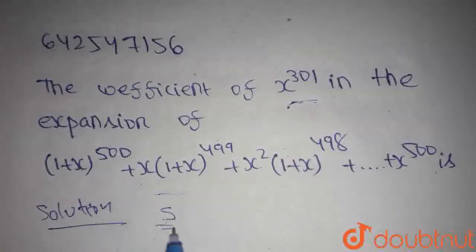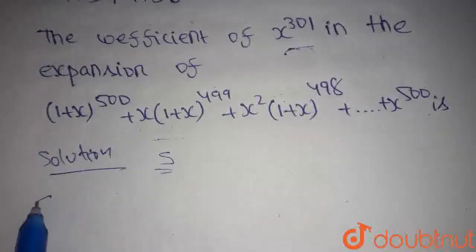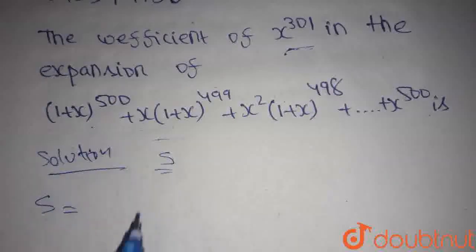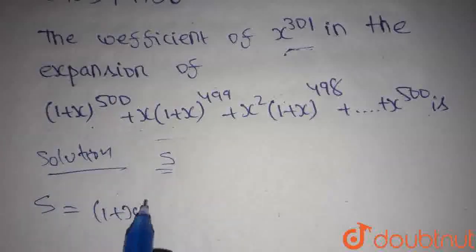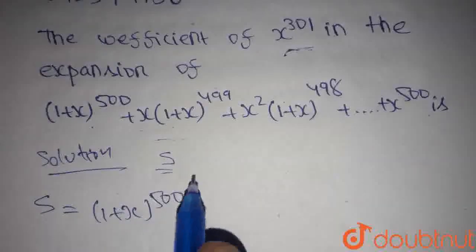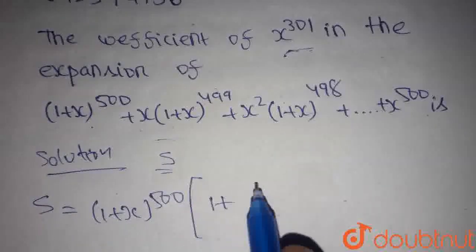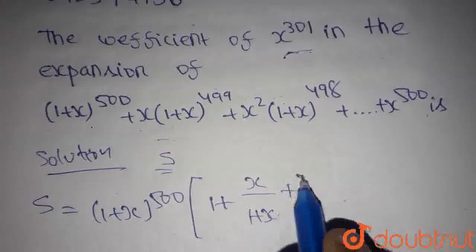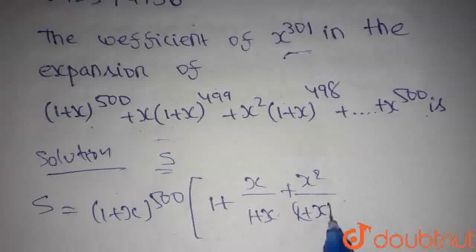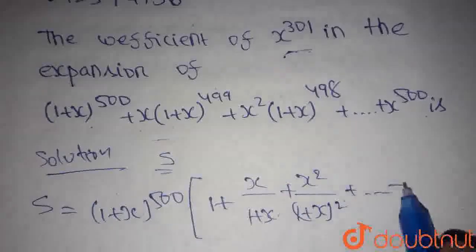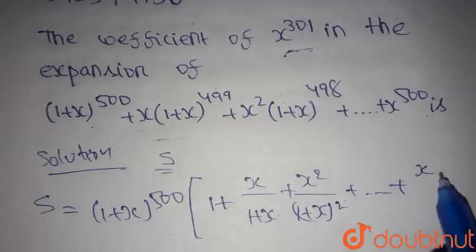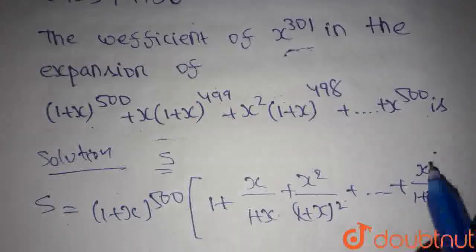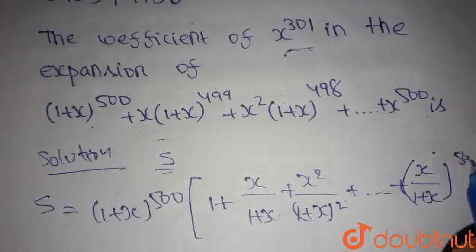Let's take this expansion as s. So s is equal to — take (1 + x) whole power 500 common. Then we remain with 1 here, plus x by (1 + x) here, plus x squared by (1 + x) whole squared here, and so on, up to x by (1 + x) whole power 500.